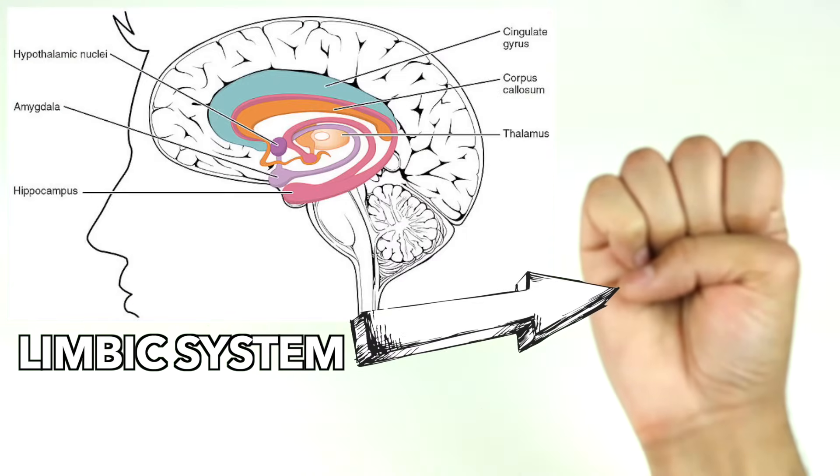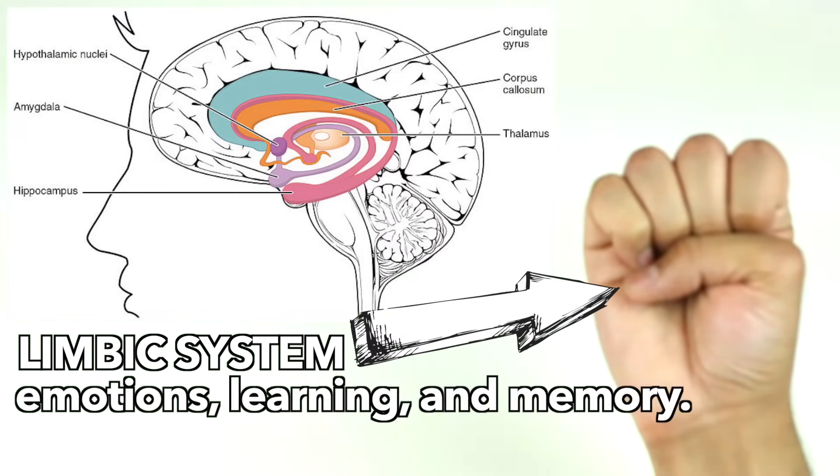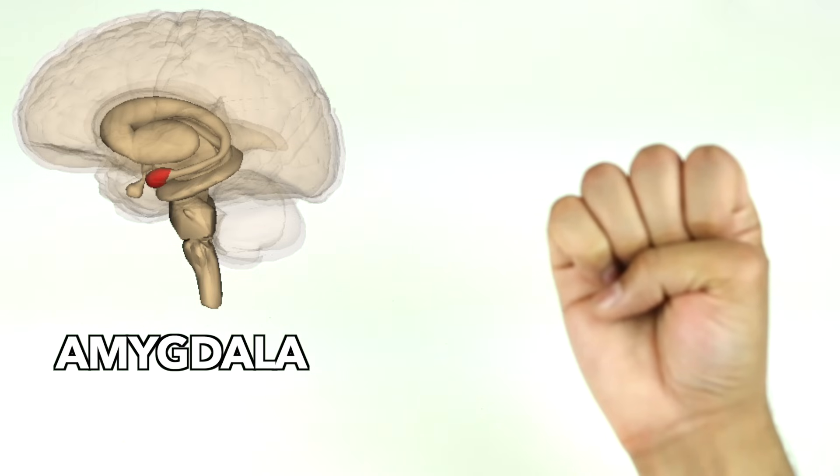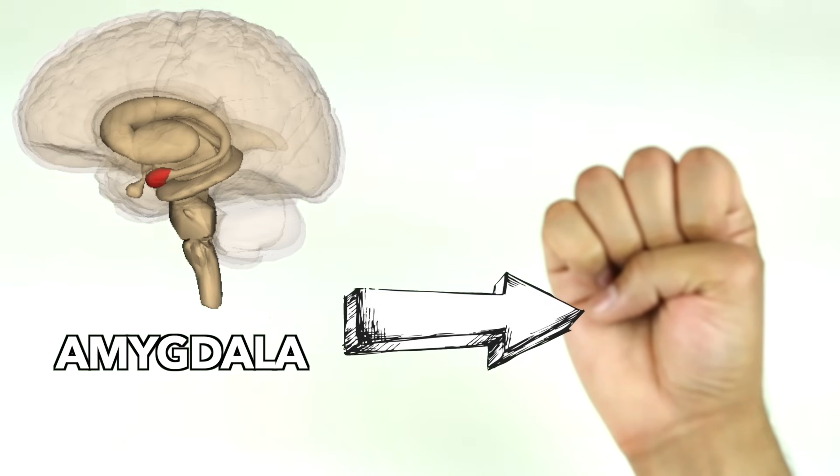If we take a closer look at the temporal lobe, we'll find the limbic system. The limbic system is responsible for emotions, learning, and memory. Inside, you'll find the amygdala, an almond-shaped structure, which is located just below where your thumbnail is. The amygdala is responsible for basic emotions.